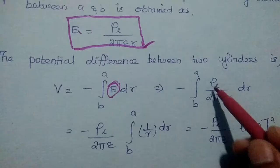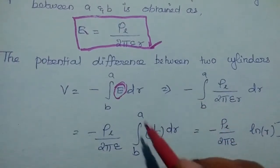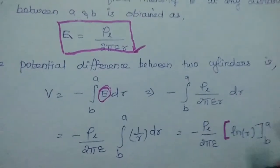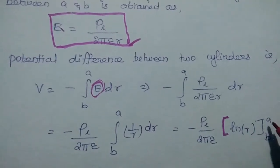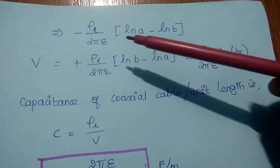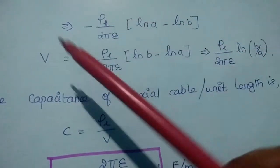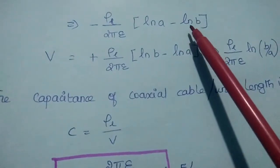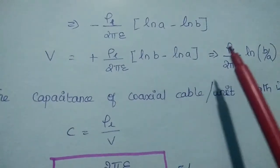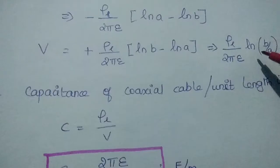We take Rho L by 2 pi epsilon outside the integral since these are all independent of R. So we integrate 1 by R from A to B, and the integration of 1 by R is the natural logarithm ln R. Substituting the limits, we get minus Rho L by 2 pi epsilon into ln(A) minus ln(B). Multiplying the minus sign inside gives ln(B) minus ln(A), and since log B minus log A equals log of B by A, we can rewrite this as Rho L divided by 2 pi epsilon into ln(B by A). This is the potential difference V.